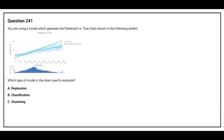Question number 241. You are using a model which generates the predicted versus true chart shown in the following exhibit. Which type of model is the chart used to evaluate? Option A: Regression. Option B: Classification. Option C: Clustering. The correct answer is option A, Regression.